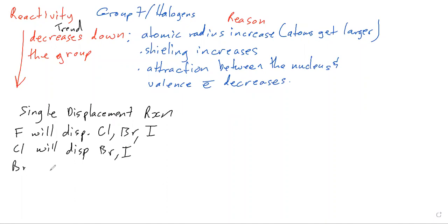Bromine will displace iodine and iodine none. So a reaction between, let's say, KBr + Cl2, what will be your product? KCl + Br2. Put the 2 in front of the KCl.